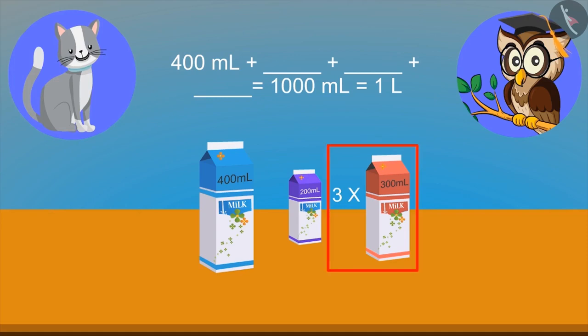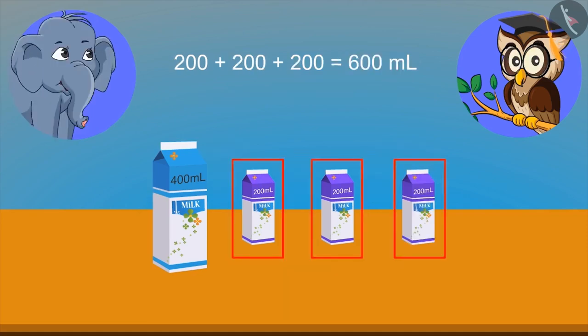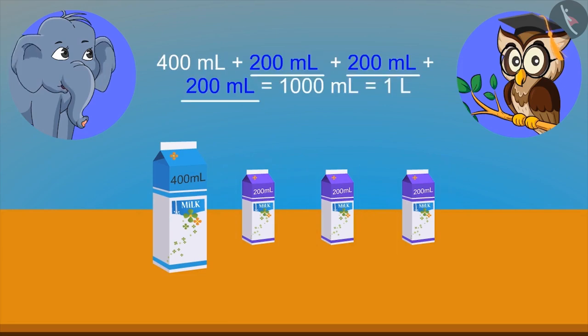Well, on combining, I think it will make 1,000 ml. I think the correct answer is 200 ml. Mixing three packets of 200 ml makes 600 ml. And mixing these 600 ml with 400 ml will make 1,000 ml.